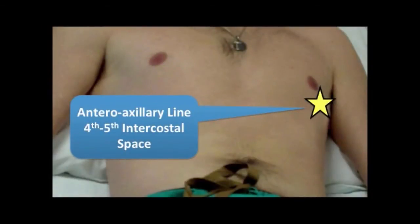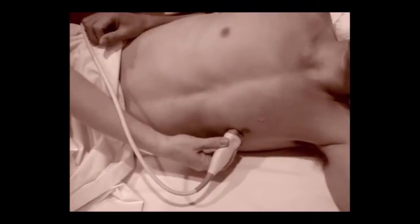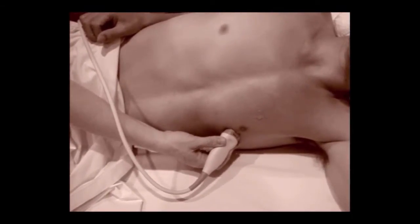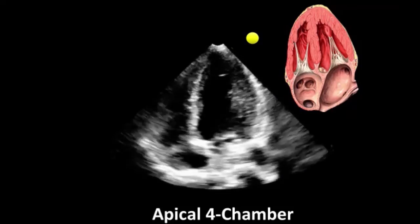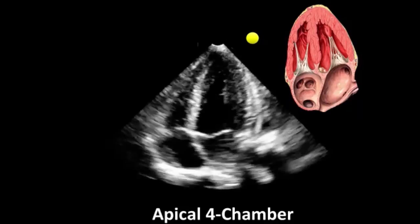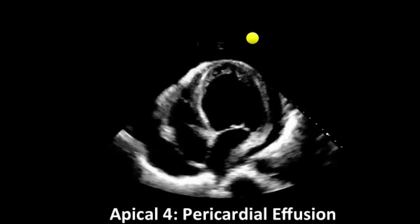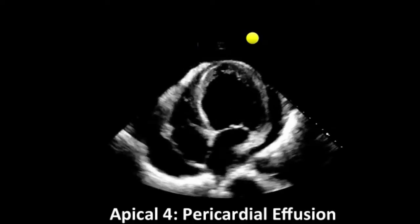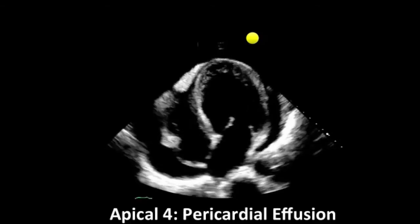When we move to the apical four-chamber view, we're going to be going to the fourth or fifth intercostal space at the anterior axillary line. The marker is going to be facing down towards the bed, and you can see here in this video just how that is done. Here's a clip from the apical four-chamber view with a patient with normal function. You can see the patient's left ventricle on the right side of the screen and the patient's right ventricle on the left side of the screen. Here's a patient in the apical four-chamber view with a pericardial effusion in addition to poor left ventricular function. These are some of the things we're going to be reviewing during the STS University session.